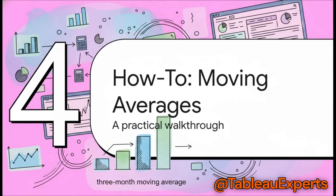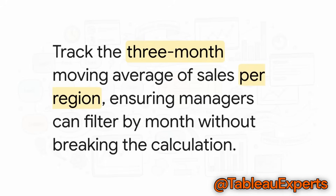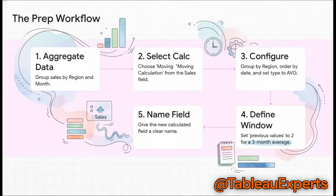Theory is great, but let's actually see how this works in practice. We're going to walk through a really common business request: calculating a three-month moving average of sales using the Superstore sample data. Imagine you're a regional sales manager — you want to track a three-month moving average of sales for each of your regions, and your team needs to be able to filter by month without the whole calculation going haywire. Inside Tableau Prep, this is surprisingly easy. First, aggregate your sales data down to the month for each region. Then click on your sales field and from the menu, pick moving calculation. In the editor that pops up, group everything by region, make sure it's ordered by date, and set the calculation type to average. For a three-month window, just tell it to include the two previous values. Give it a clear name, and that's it — you've just created a powerful, pre-calculated field.